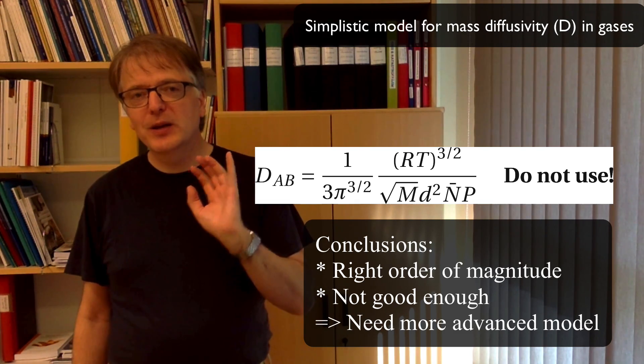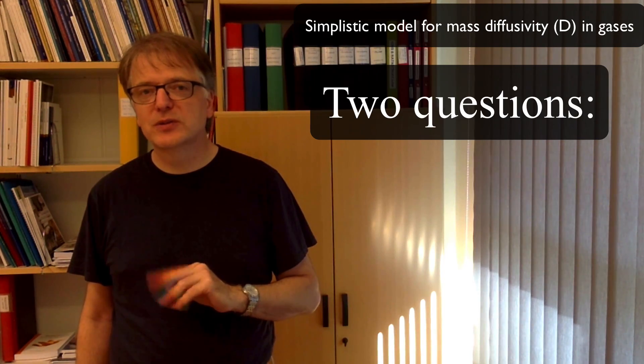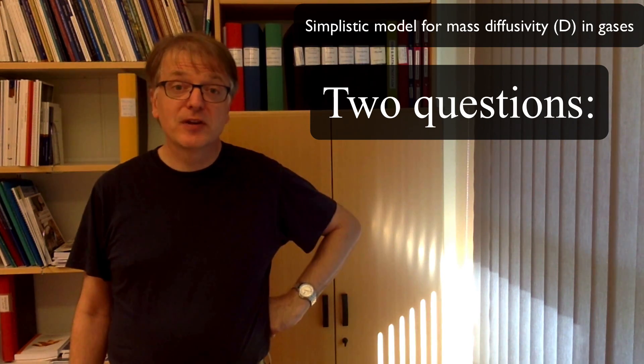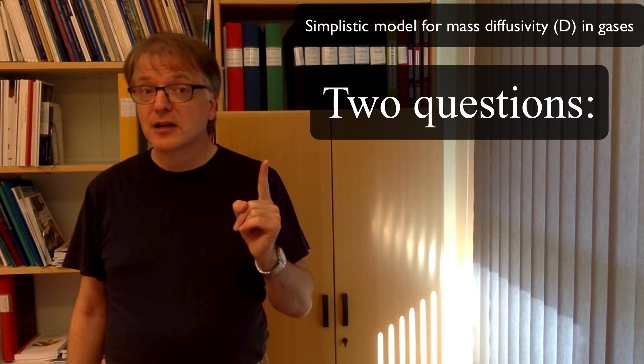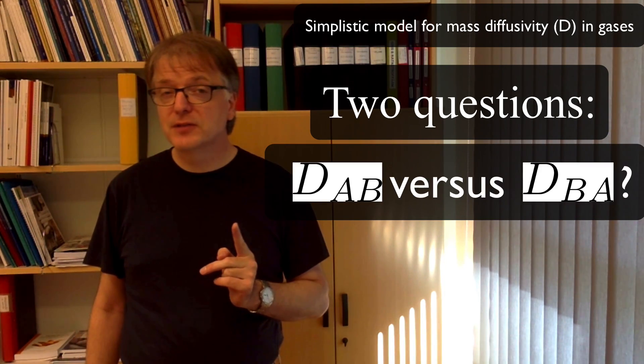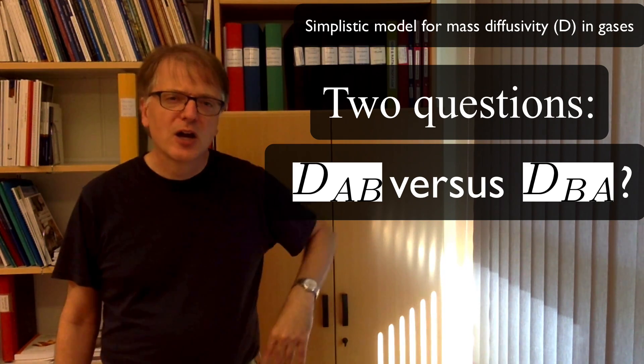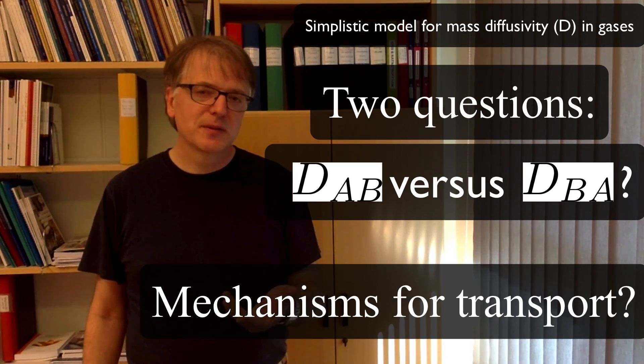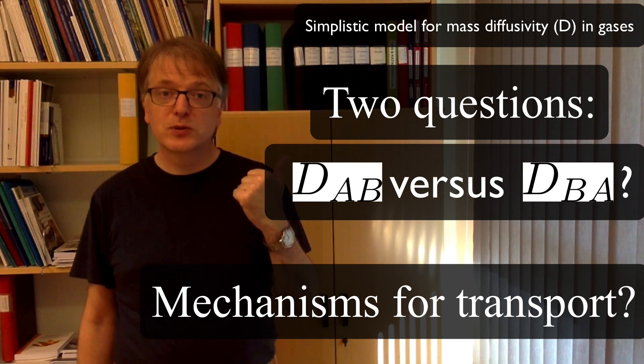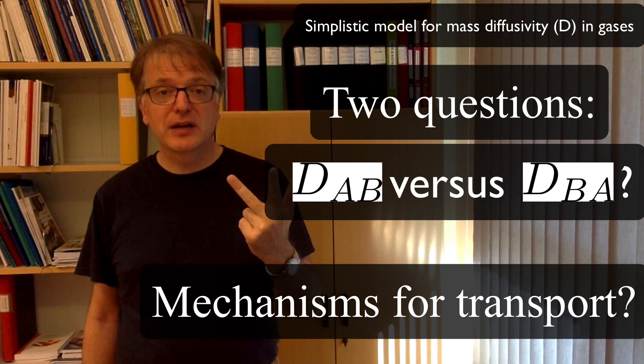But before we go into a more advanced model, there are two questions that I think we should ask ourselves. And there are two separate videos for that. One question is, if you know the diffusivity of A in B, does that tell you anything of the diffusivity of B in A? And the other thing, what are the mechanisms behind diffusion of heat, diffusion of mass, and diffusion of momentum? Are there any similarities?